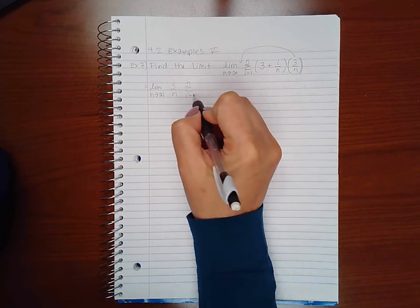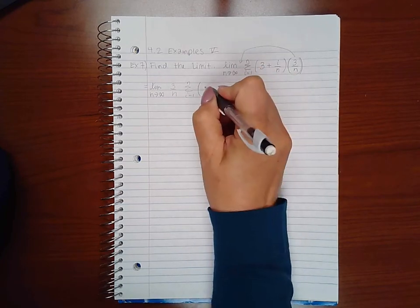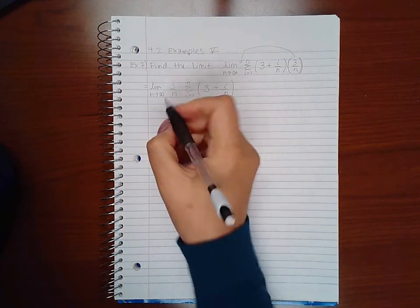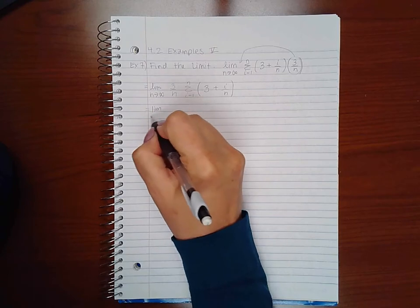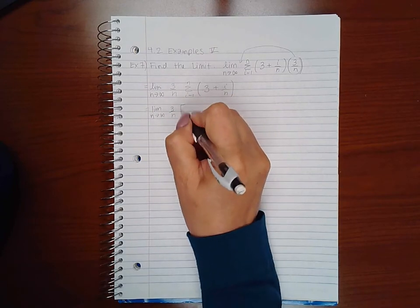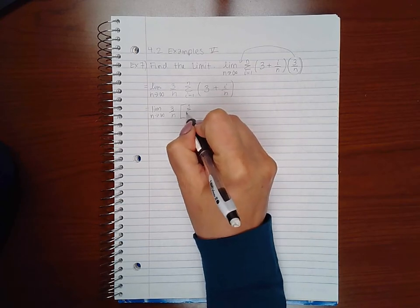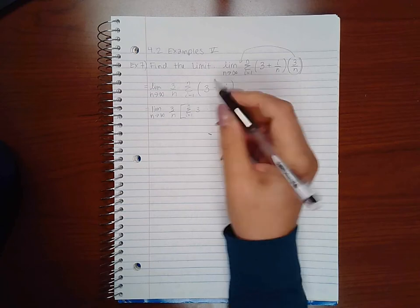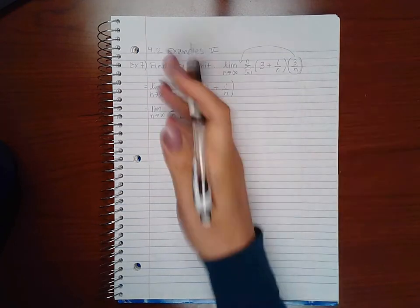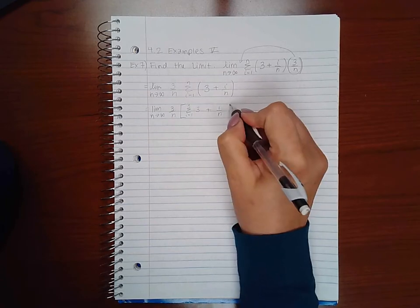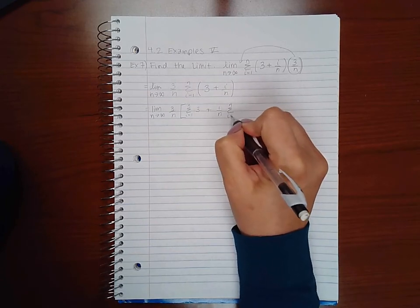And then I'm going to split this up as well so I get the limit as N goes to infinity and I'm going to have the summation of the constant 3, and I am going to take out the part that doesn't have an I which is 1 over N, and then I have the summation of I.